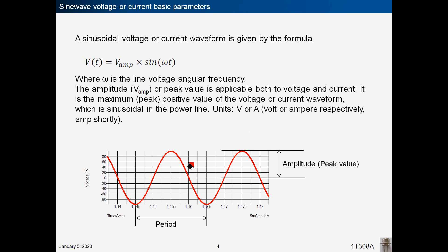A sinusoidal voltage or current waveform is given by the formula V of t equals amplitude times sine omega t, where omega is the line voltage or angular frequency. The amplitude or peak value is applicable both to voltage and current. It is the maximum or peak positive value of the voltage or current waveform, which is sinusoidal in the power line. The units are volts or amperes.